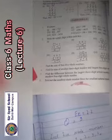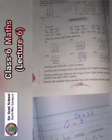Today's lecture starting from question number three, exercise 8.2. Now, question number three is find the sum of first five whole numbers. As we know, whole number starts from 0.